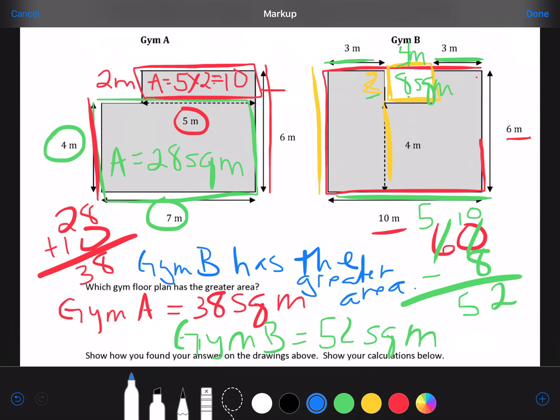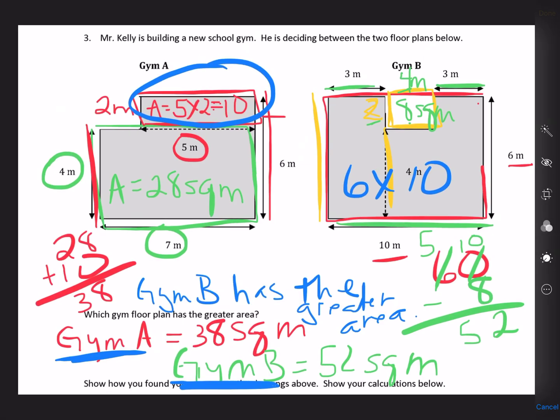It says show how you found your answer on the drawings above, and then show your calculations below. So we have our calculations written like there, and then 6 times 10 was for the whole space. And you would just rewrite those below, and I would label one set gym A and the other set gym B, and just keep them separated. It kind of feels like you're doing things twice, but you are. You're doing it once on your drawings, and then again nice and neatly laid out. And that's number 3.